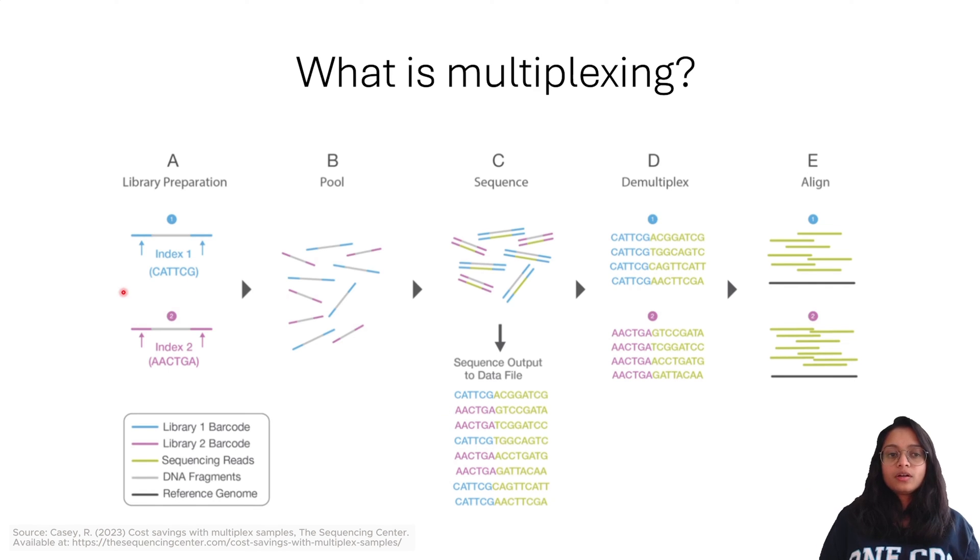In the library preparation step, along with adding the sequencing adapters, we also add sample specific barcodes. These barcodes will allow us to identify from which sample it is coming from. Here in the diagram, we have index 1, which is essentially a barcode for blue samples, and index 2 is a barcode for the pink samples.